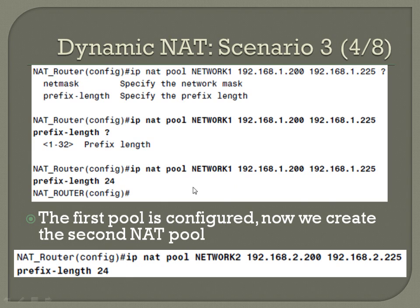Now create the second NAT pool with the same structure but for the other block of IPs: IP NAT pool NETWORK2 192.168.2.200 192.168.2.225 prefix-length 24.